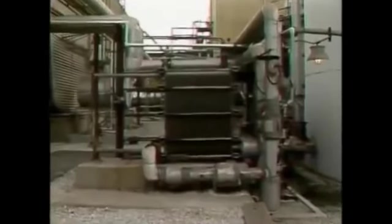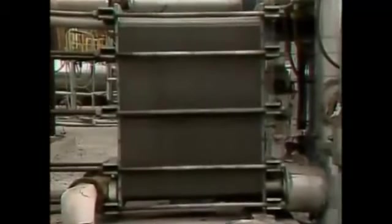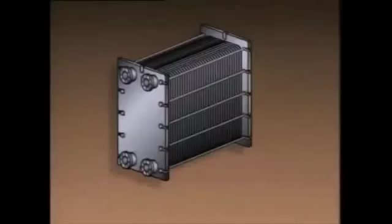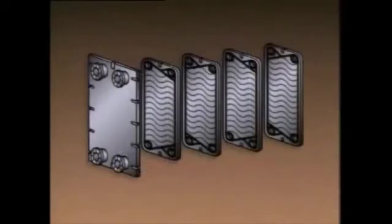Like all other heat exchangers, a plate heat exchanger transfers heat from one fluid to another. This particular plate heat exchanger uses a series of thin metal plates placed back to back to transfer the heat. The plates are arranged so that hot fluid flows downward on one side of a plate, and cold fluid flows upward on the opposite side of the plate. The heat is transferred from the hot fluid through the plate to the cooler fluid on the other side. To see how a plate heat exchanger works, we'll use this simplified illustration of a counter flow plate heat exchanger.